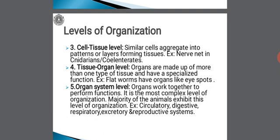Then comes the fourth type: tissue organ level. Here, tissues have organized together to form an organ. Organs are made up of more than one type of tissue and have a specialized function. Example: flatworms, which have organs like eye spots.